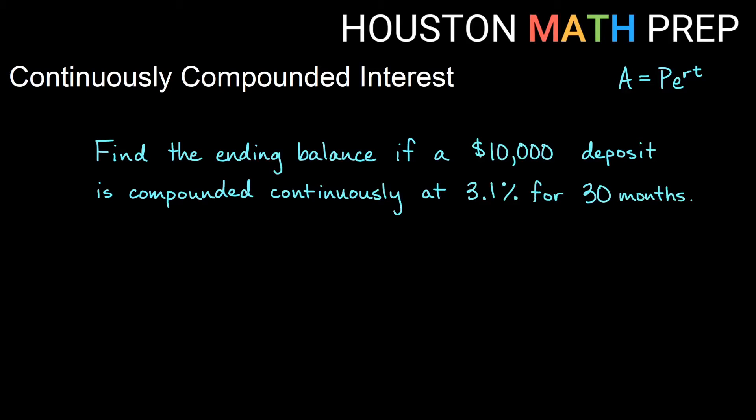Let's look at an additional example here. We want to find the ending balance. So again, we're finding A, if a $10,000 deposit, so that is our P, is compounded continuously. Those two words tell us use this formula here instead of the other compounding interest formula. Our rate is 3.1%, so r in our formula will be 0.031. And time is 30 months. Now our 30 months needs to be written in years, right?